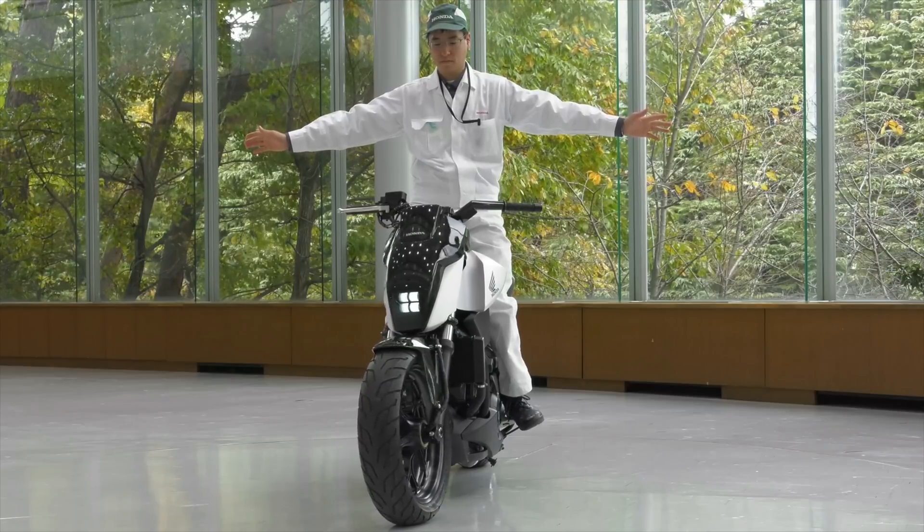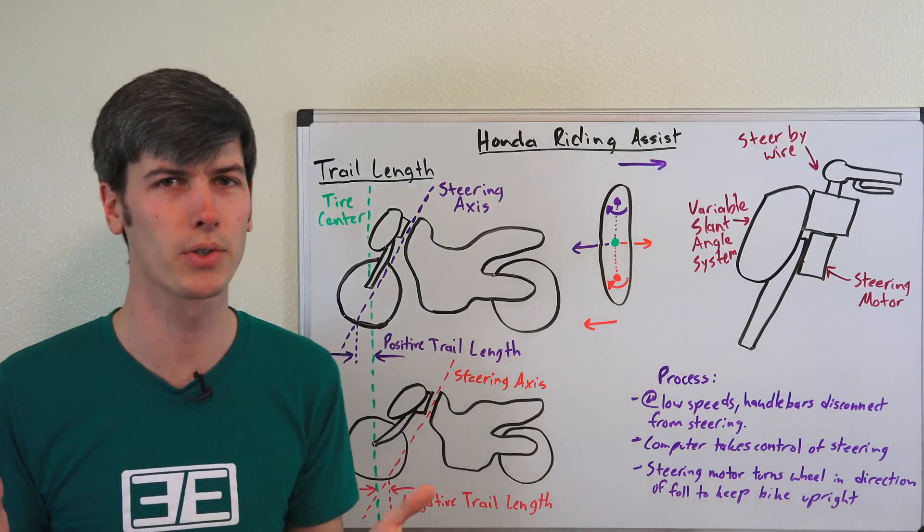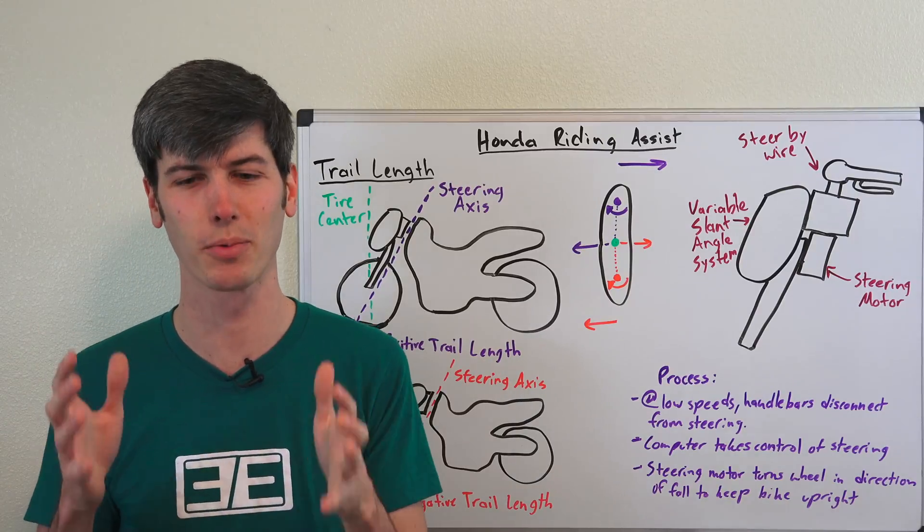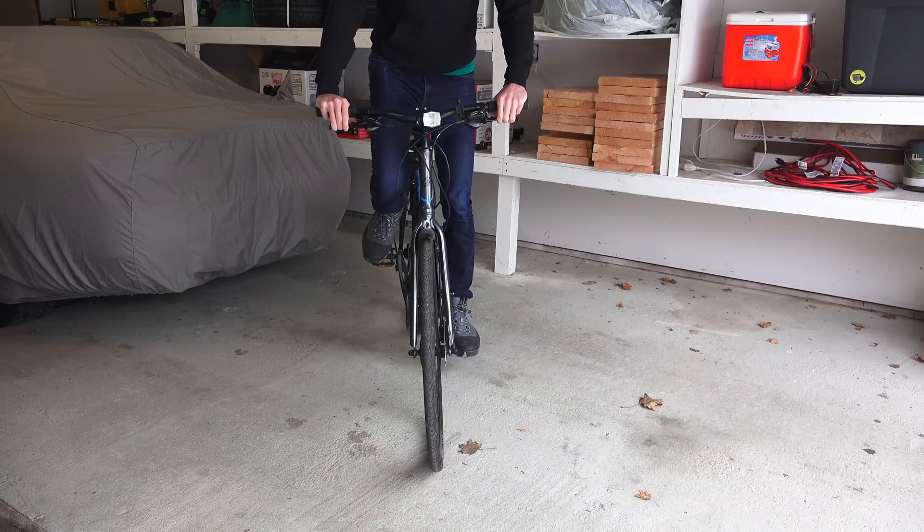This technology is used to help prevent the bike from falling over. Now usually something like this would require gyroscopes, but Honda's solution is actually really simple and doesn't use any gyroscopes at all.